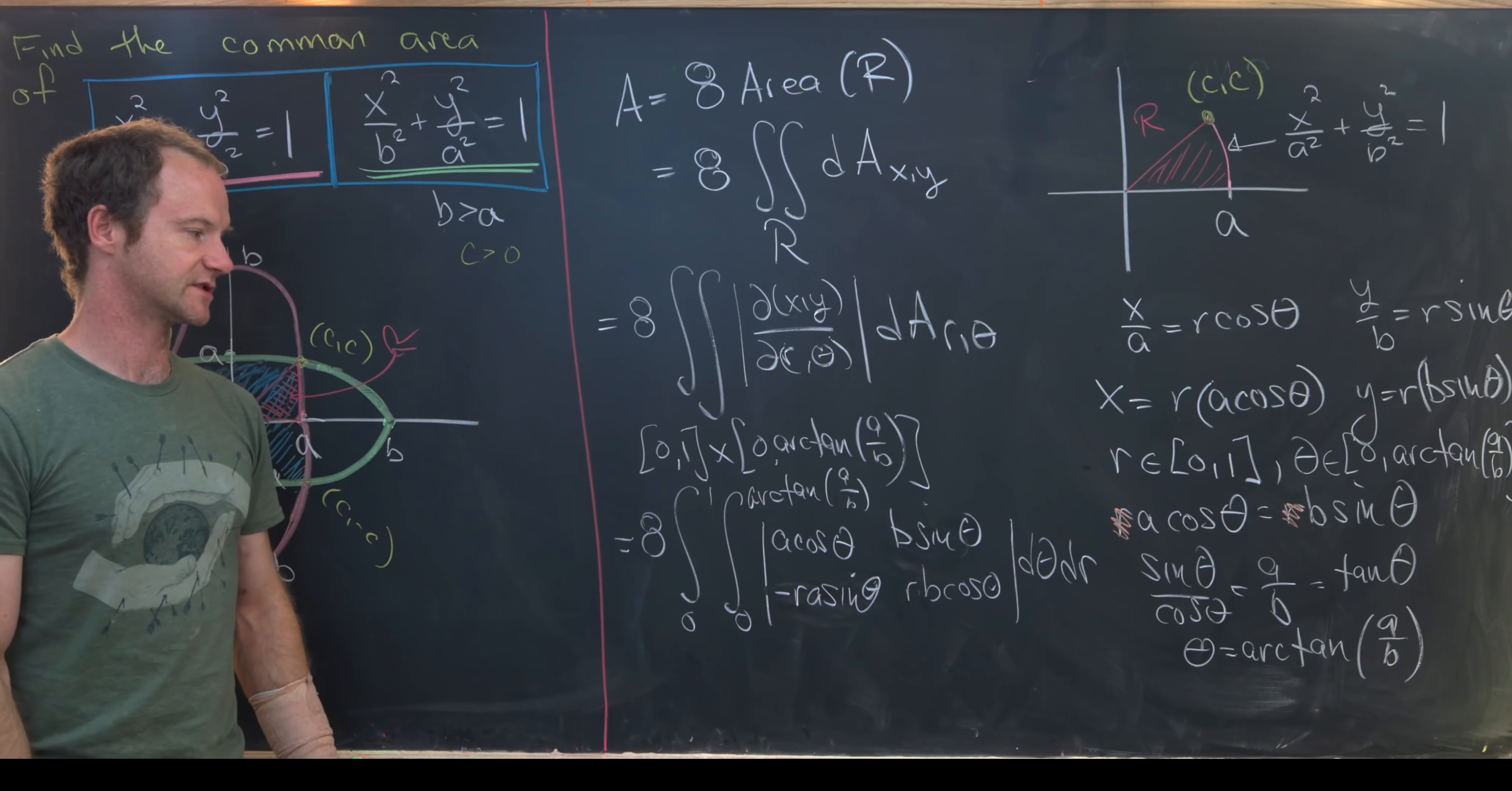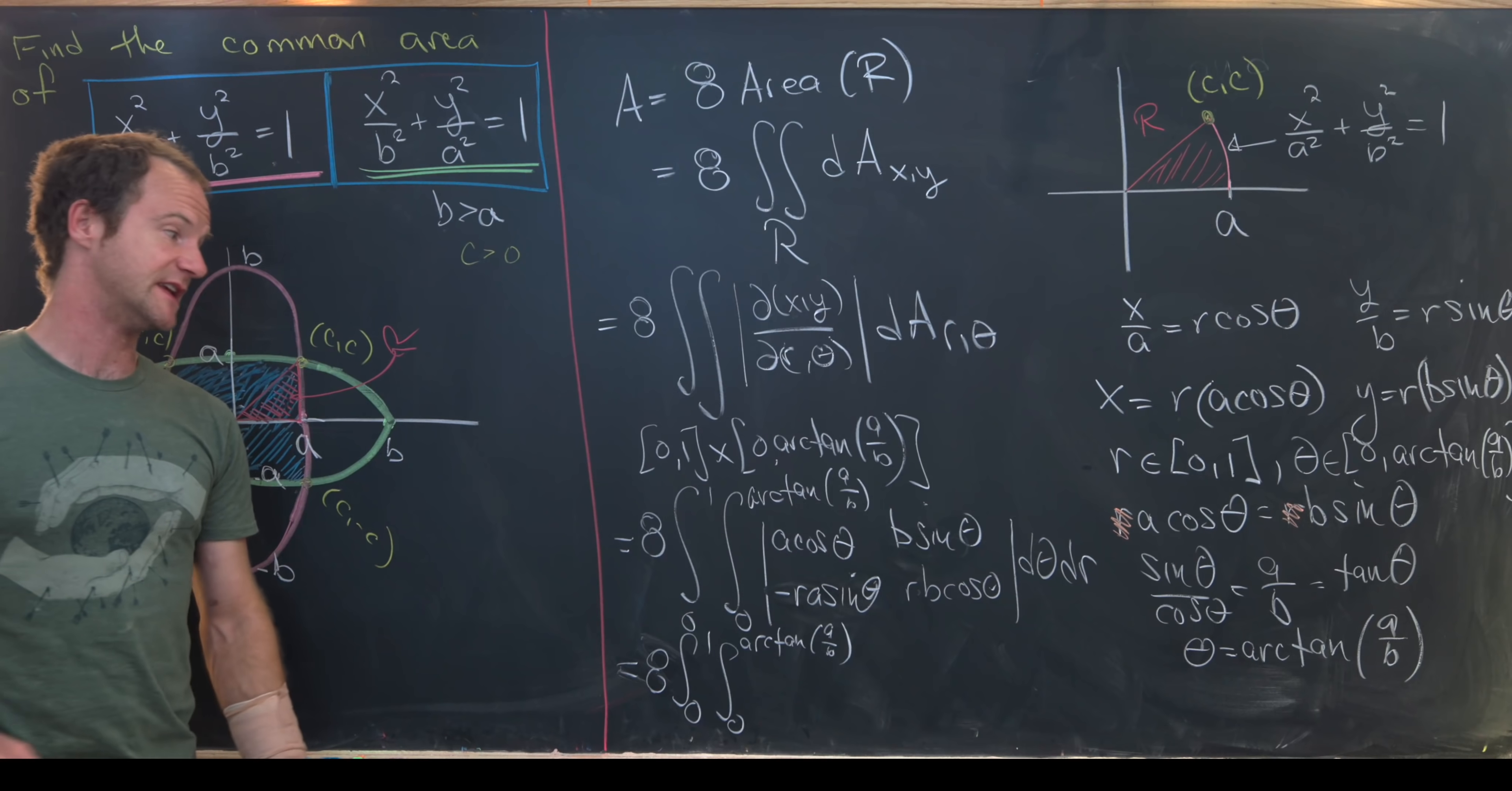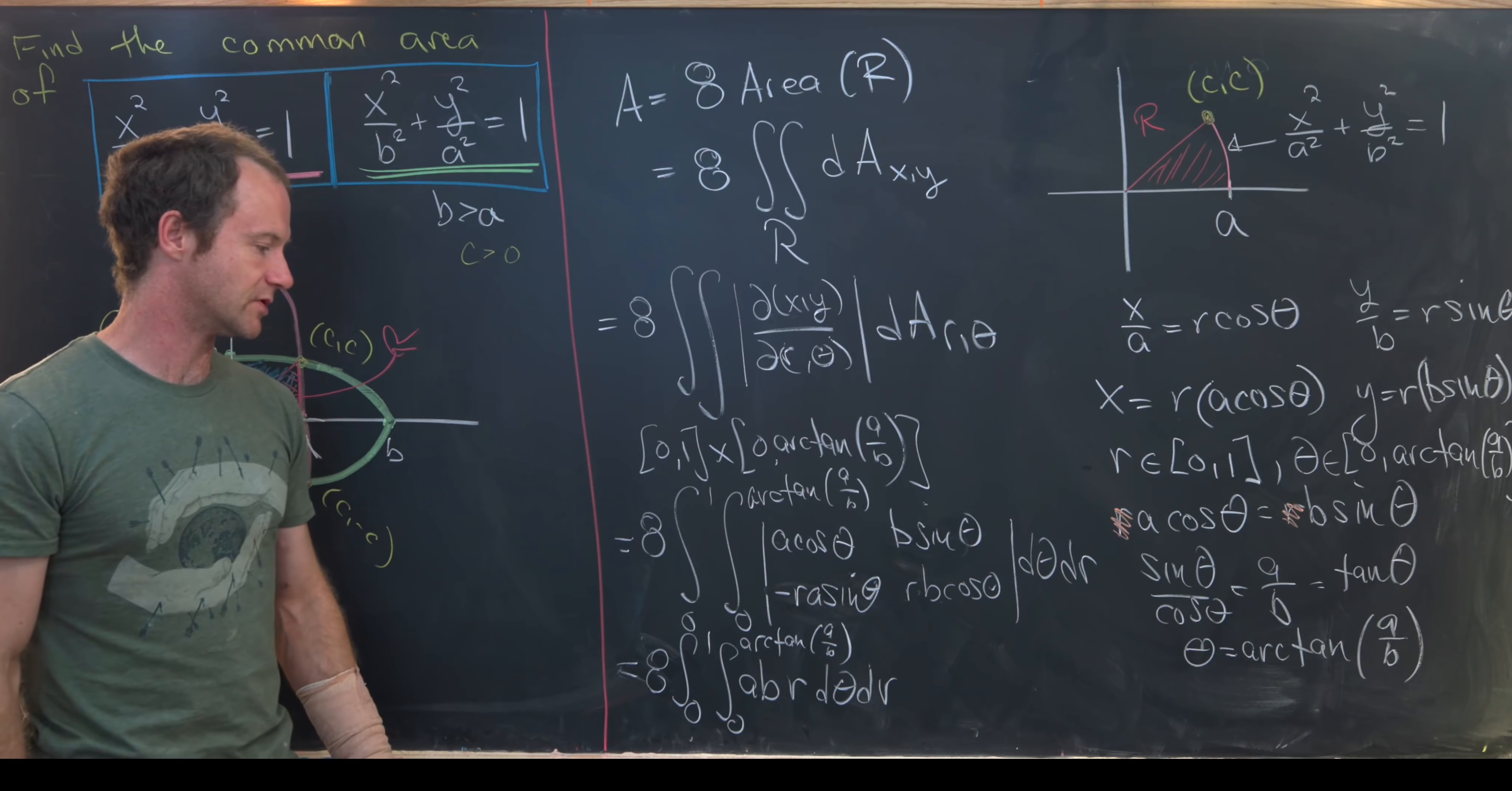Now doing the calculation, we see that this is equal to 8 times the integral from 0 to 1, the integral from 0 to arc tan of a over b. This determinant is actually pretty easy to calculate. Notice we have a r b cosine squared theta plus a r b sine squared theta. So in the end, that will be a b times r d theta dr. And now we're left with a fairly simple double integral.